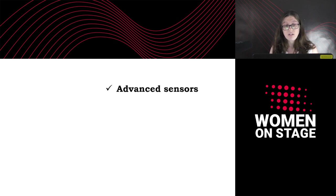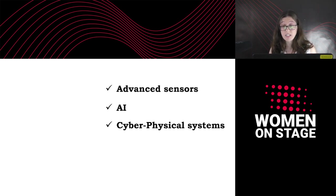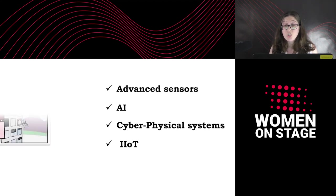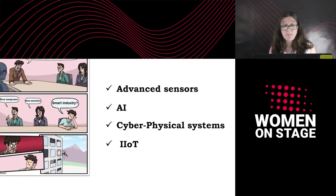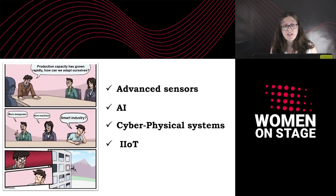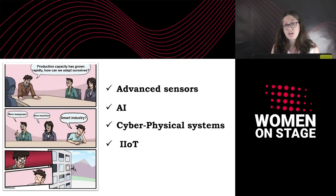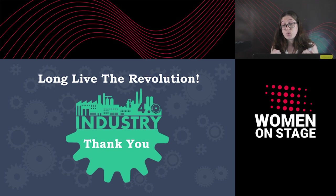Here is an example of a company that ticks many of the right boxes: advanced sensors, AI, Cyber Physical Systems, and IoT. Just like in the picture, a company that fails to make the technological and mindset change will remain behind. And with this, long live the revolution. Thank you.